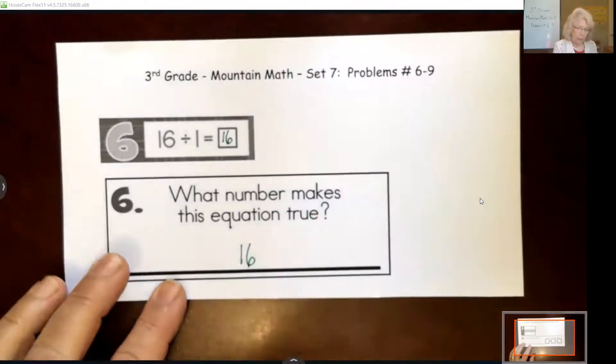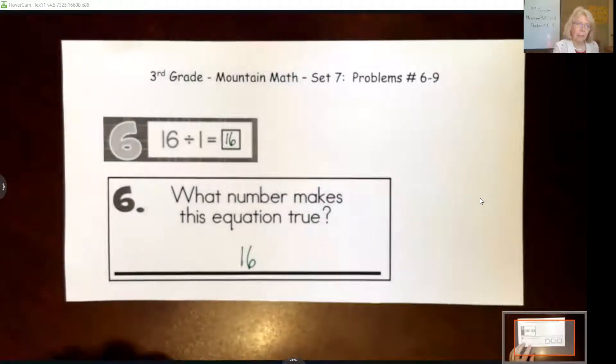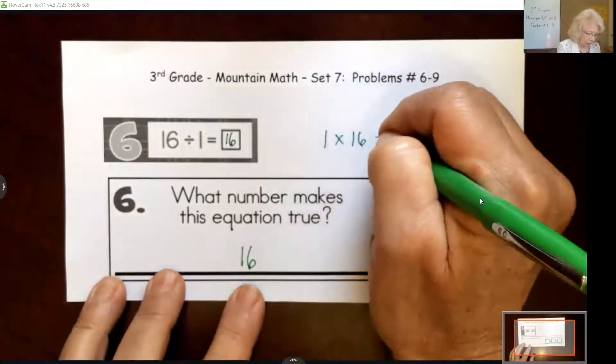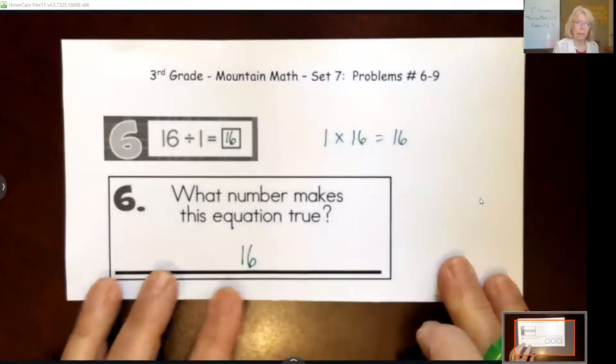It asks what number makes this equation true. So remember, 1 times any number is also itself. Just to throw that in, we call that the identity property.